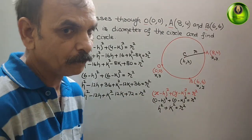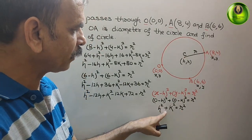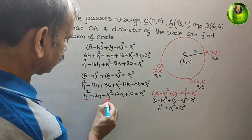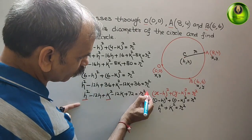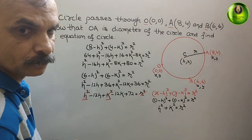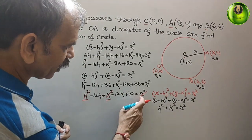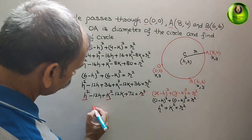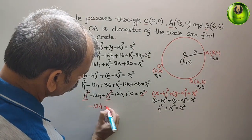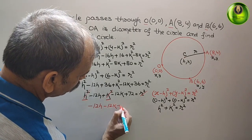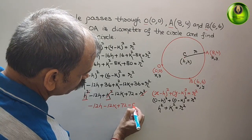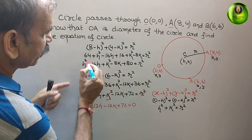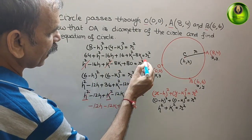Now, R² = H² + K². So in both equations, H², K², and R² cancel out. From the B equation, eliminating those terms gives: -12H - 12K + 72 = 0. From the A equation, eliminating those terms gives: -16H - 8K + 80 = 0.